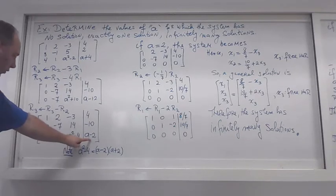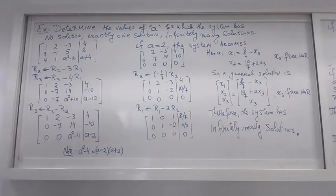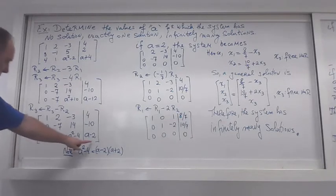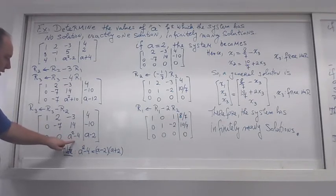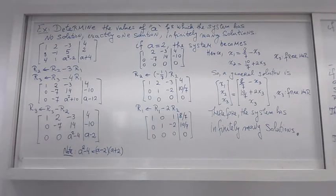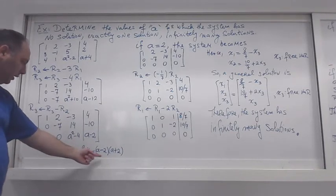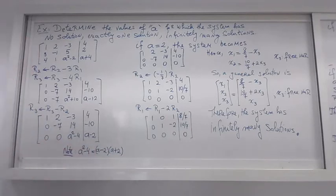We cannot simply divide by (a - 2), because if a equals 2 we would be dividing by zero, which is not allowed. This situation tells us the values of A we need to test — the trouble values. In this case the trouble values are a = 2 and a = -2.